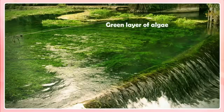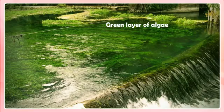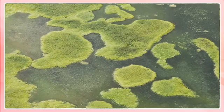Photosynthesis by algae. Many times we have seen patches of slimy green layer floating on the surface of a pond, lake, or even in the stagnant parts of a river. Algae are a large group of simple, plant-like organisms. Algae contain chlorophyll and produce food by photosynthesis, just like plants. Algae, however, differ from plants because they do not have proper roots, stems and leaves.